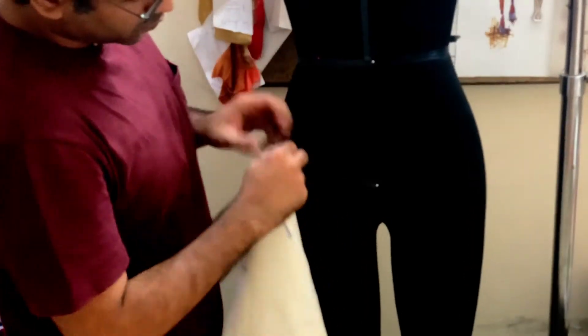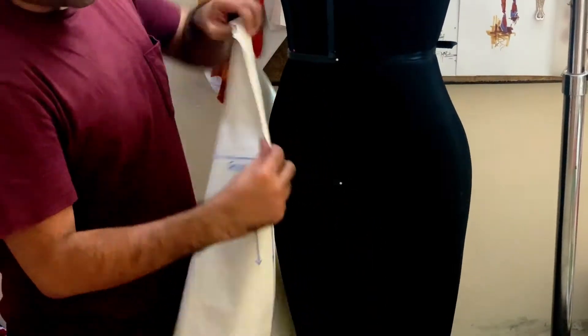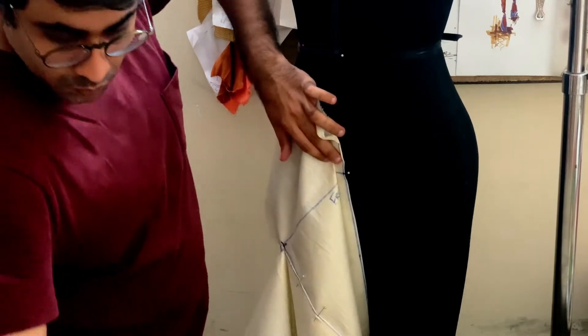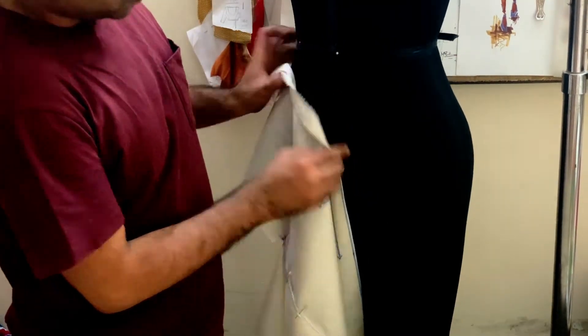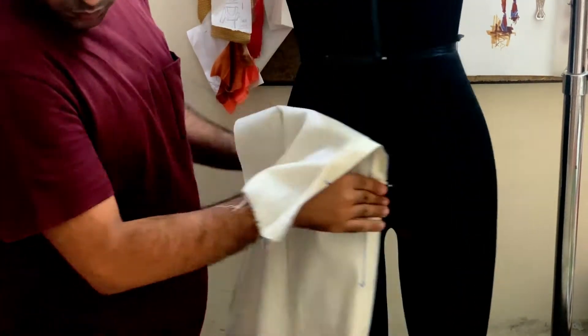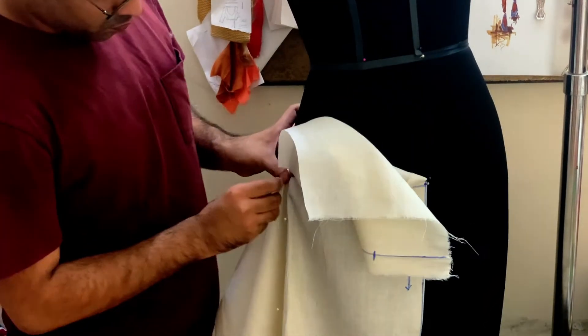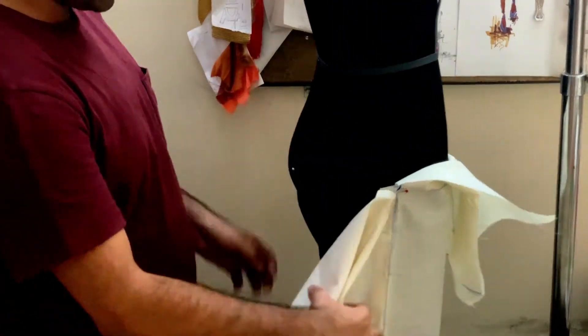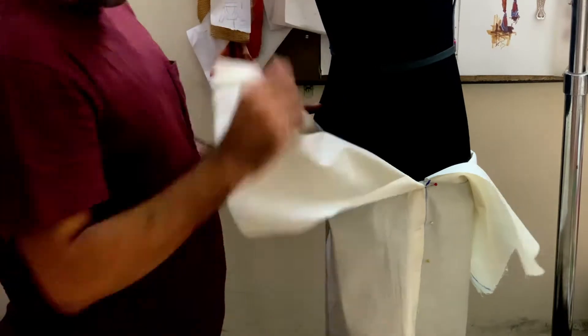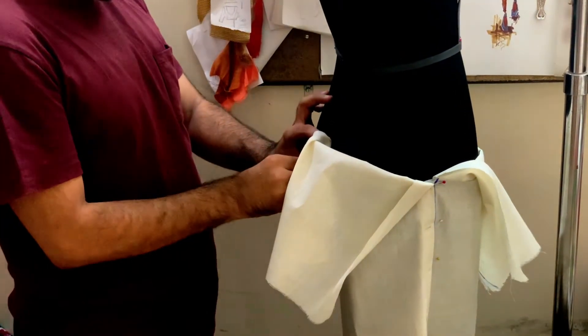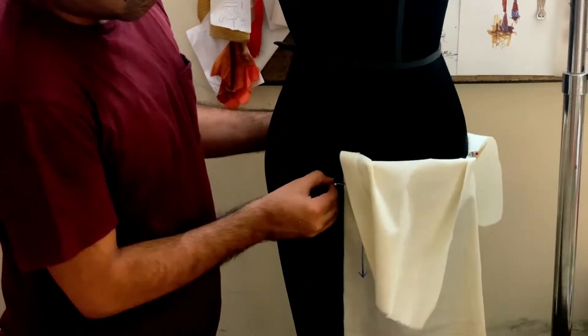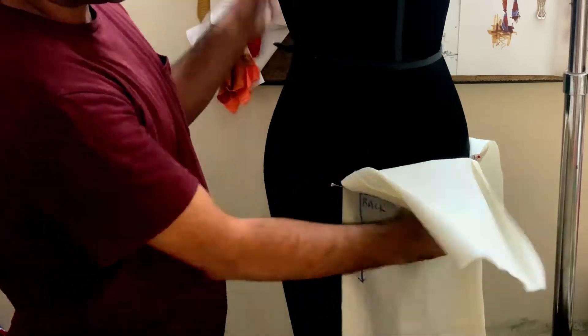Then we take this on the dress form and we will put it parallel to the hip level. The hip line and the hip line on the dress form should align well. So the first pin we are going to take is for the hip level, and then we will align the hip level from the back.